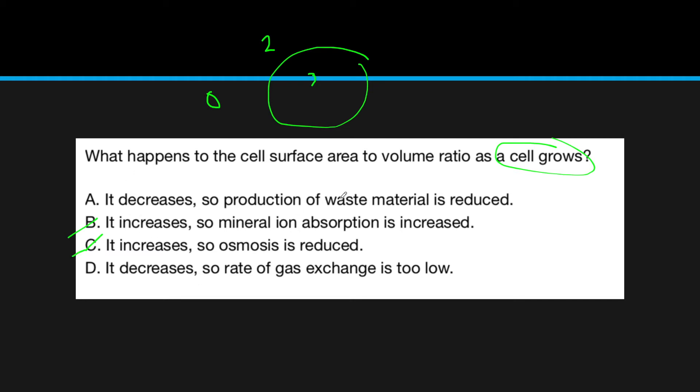Now we look at the second part. The production of waste material is reduced? If anything, the cell is huge now, the waste material production is going to increase dramatically. So the answer is D: it decreases, so the rate of gas exchange is too low. This makes sense as it takes much longer for gases to go through the whole cell.